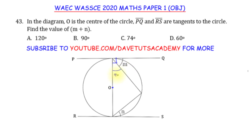So this particular angle will be 90 minus M, and the same thing also goes here — the angle between the tangent and the radius of the circle from O to this point is 90 degrees, so this angle can be taken as 90 minus N. Now, the line from this tangent to the other tangent passing through the center of the circle constitutes the diameter.